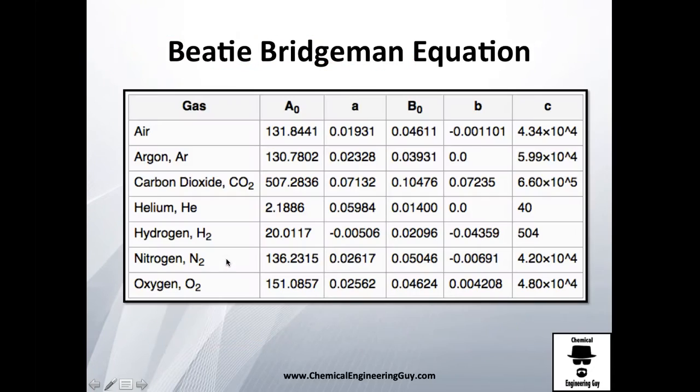I told you about the constants. You need the constant for every gas - common substances such as air, helium, hydrogen, etc. are reported here. We're going to stick with our nitrogen example, and you can see the A₀, a, B₀, b, and c values.